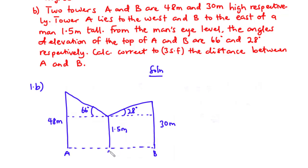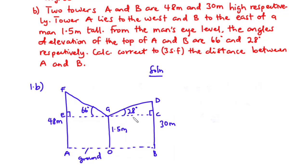We label the diagram: points A, O, B on the ground, with C, D representing tower A and E, F representing tower B, and G as the man's eye level. To solve this, we consider two triangles — triangle GEF and triangle GCD — and find the distances GE and GC. The distance GE equals distance AO, and GC equals distance OB. Adding these two gives the distance between A and B.